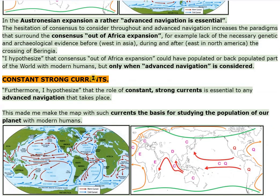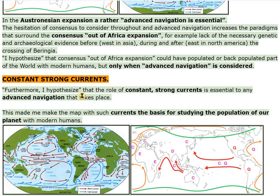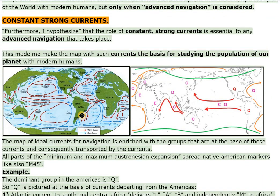Furthermore, I hypothesize that the role of constant, strong currents is essential to any advanced navigation that takes place. This led me to make a map with such currents as the basis for studying the population of our planet with modern humans. The map of ideal currents for navigation is enriched with the groups that are at the base of these currents and consequently transported by the currents.